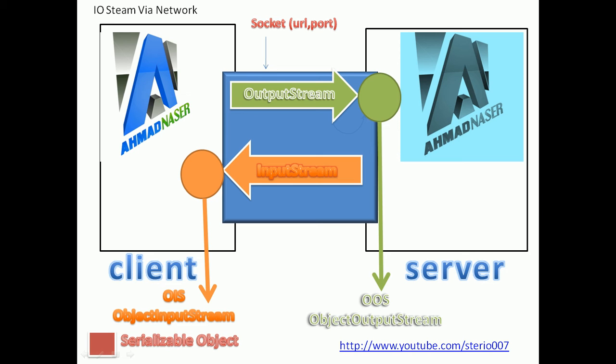After defining the socket we need to define the output stream for that socket. We get the output stream from the socket, and similarly we get the input stream from the socket. When we need to write to the server, we have a serializable object — same as before — we move it via the output stream to the ObjectOutputStream, and the ObjectOutputStream writes the serializable object into the server.